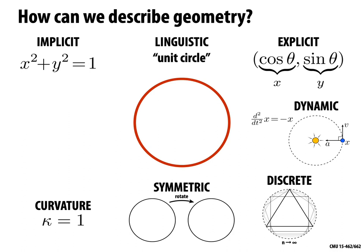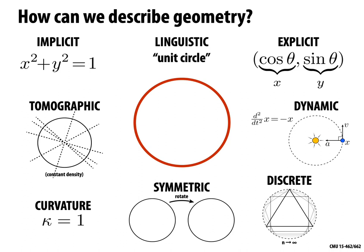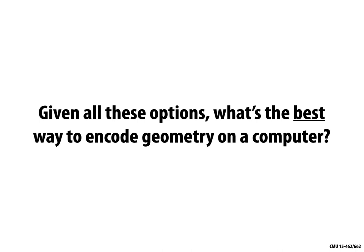There's also a tomographic description. If you get a CT scan, what's really being read is the total density of the object along lines through space. For a circle, this is constant; for other shapes, you get some other description. The point is: at any moment, for any shape, there may be many different ways of characterizing that shape and communicating what shape it is. So it's natural to ask: given all these different options, what is the best way to encode geometry on a computer?